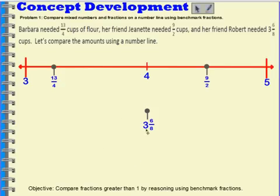Let's think about where 3 and 6 eighths cups would fall on our number line. It's telling us we have 3 wholes and 6 parts if the parts are divided into 8 parts. 4 eighths would be about halfway between the 3 and the 4. 8 eighths would be all the way to the 4. So 6 eighths is going to be somewhere between the halfway mark and the 4, about right here on our number line. Now we can see that 13 fourths is less than 3 and 6 eighths, and 3 and 6 eighths is less than 9 halves.